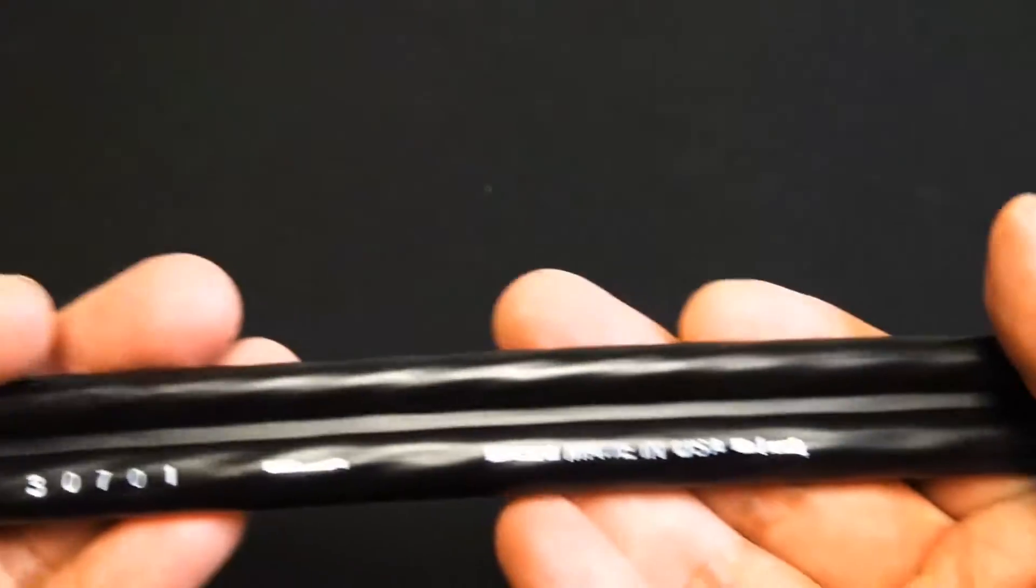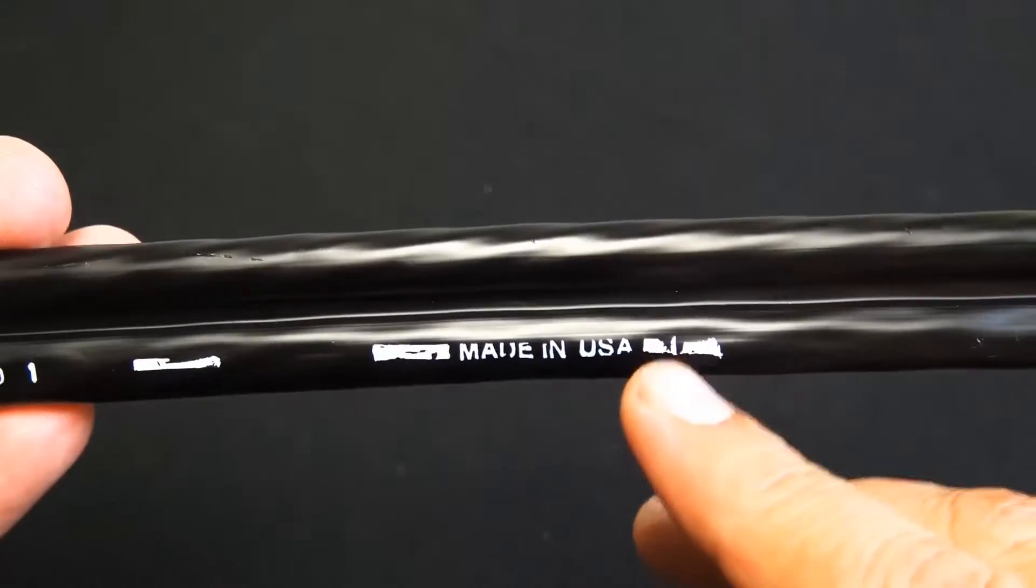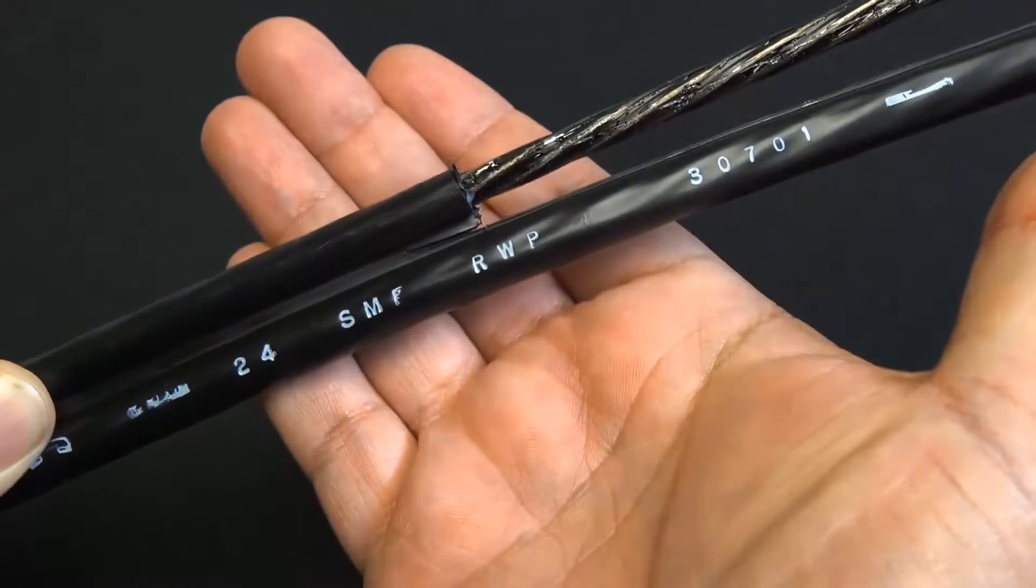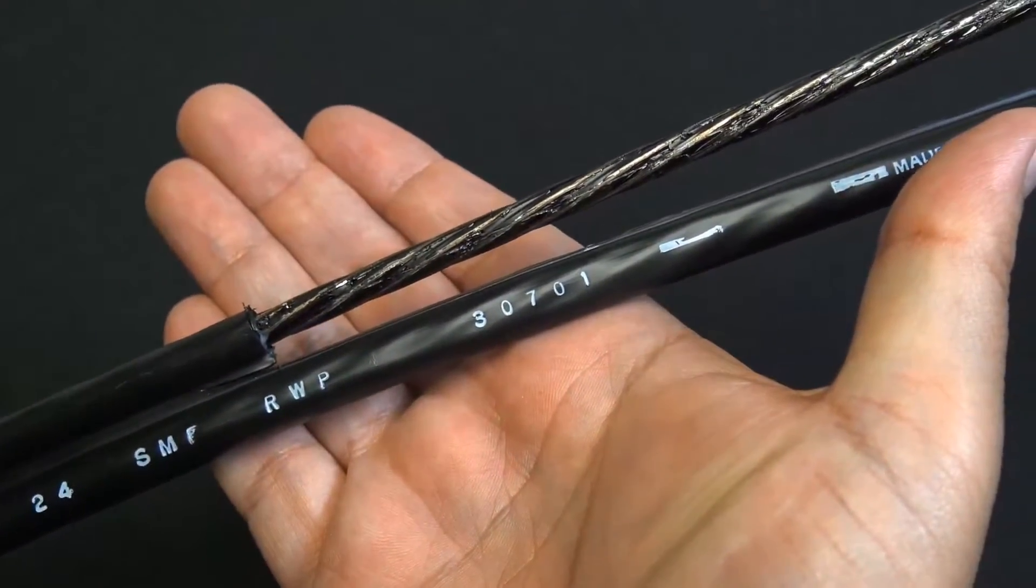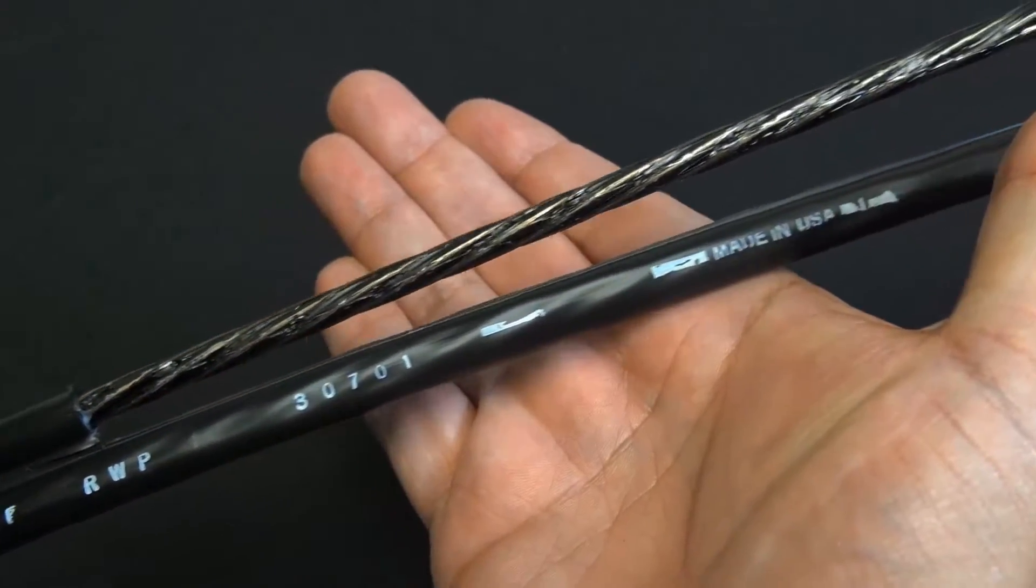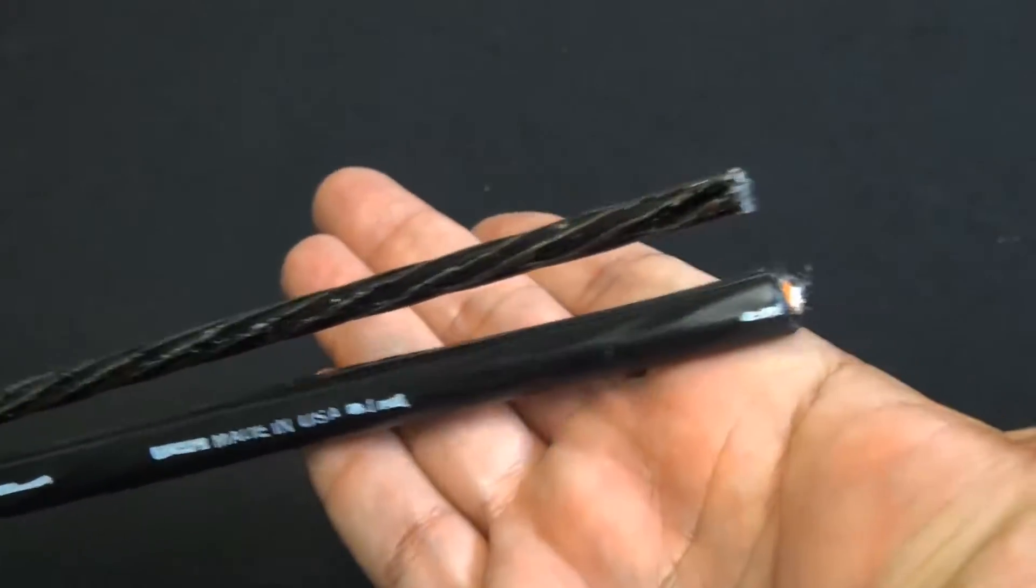This is a loose tube construction, and loose tube cables are—there it is, made in USA, nice. Loose tube cables are the product of choice as the backbone in outside plant OSP applications.